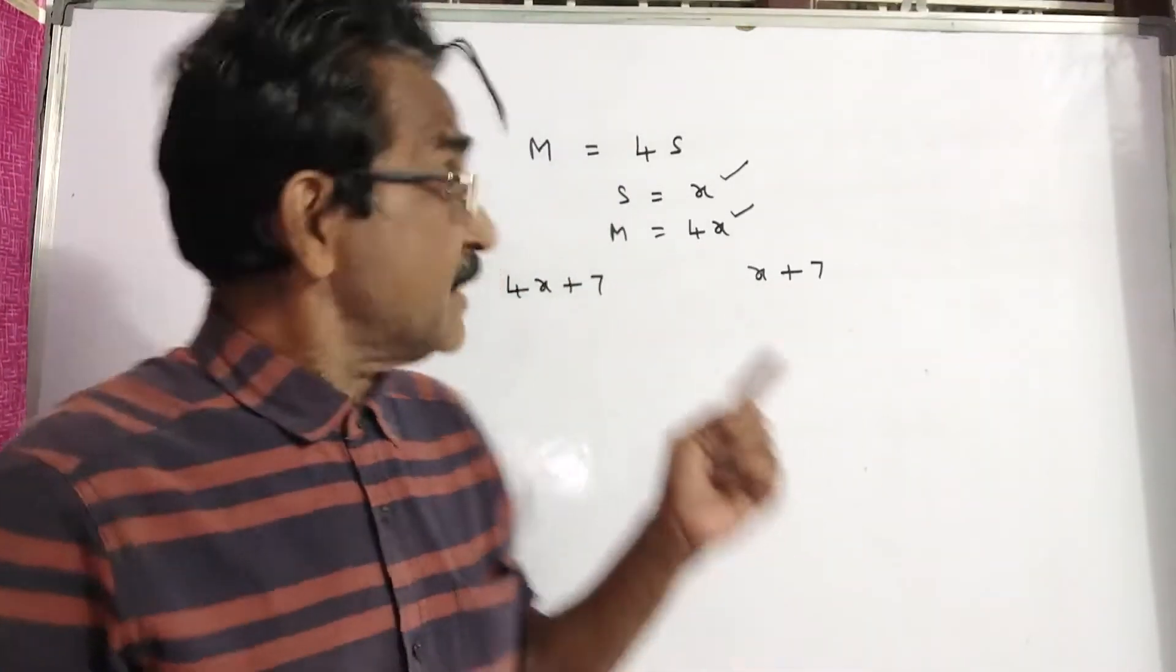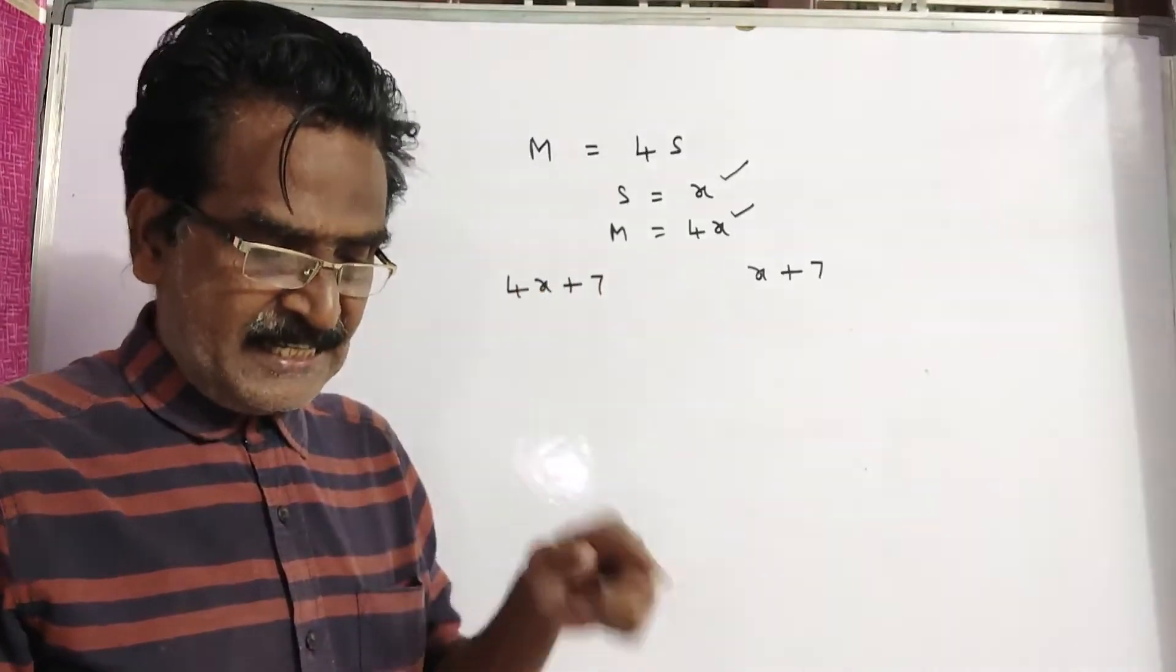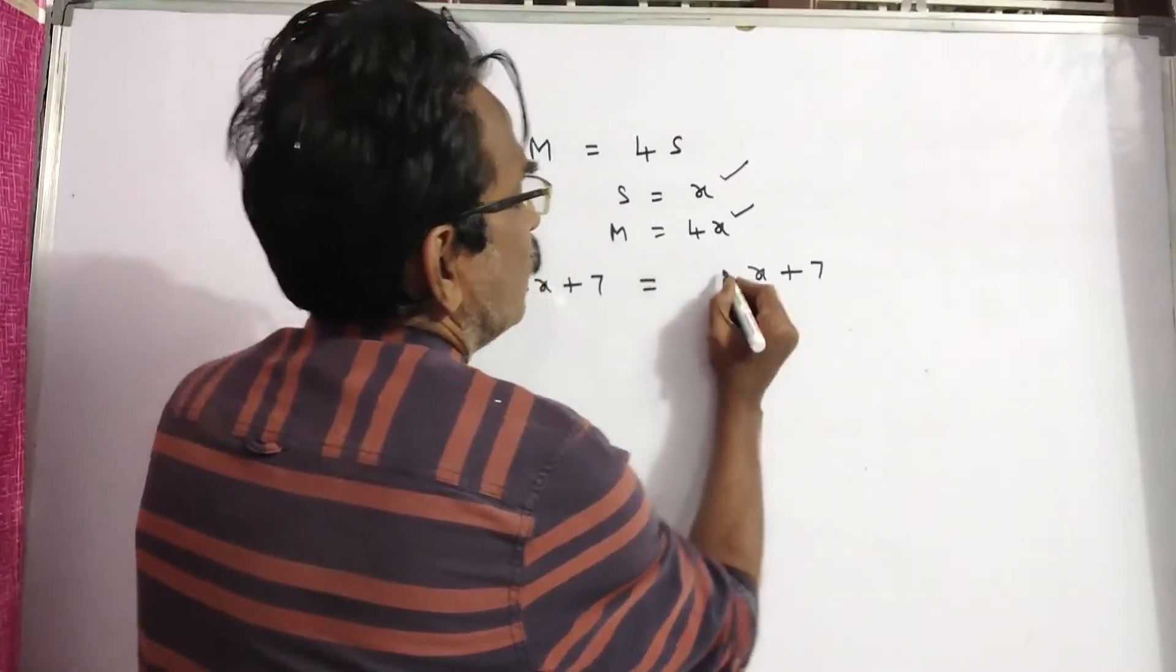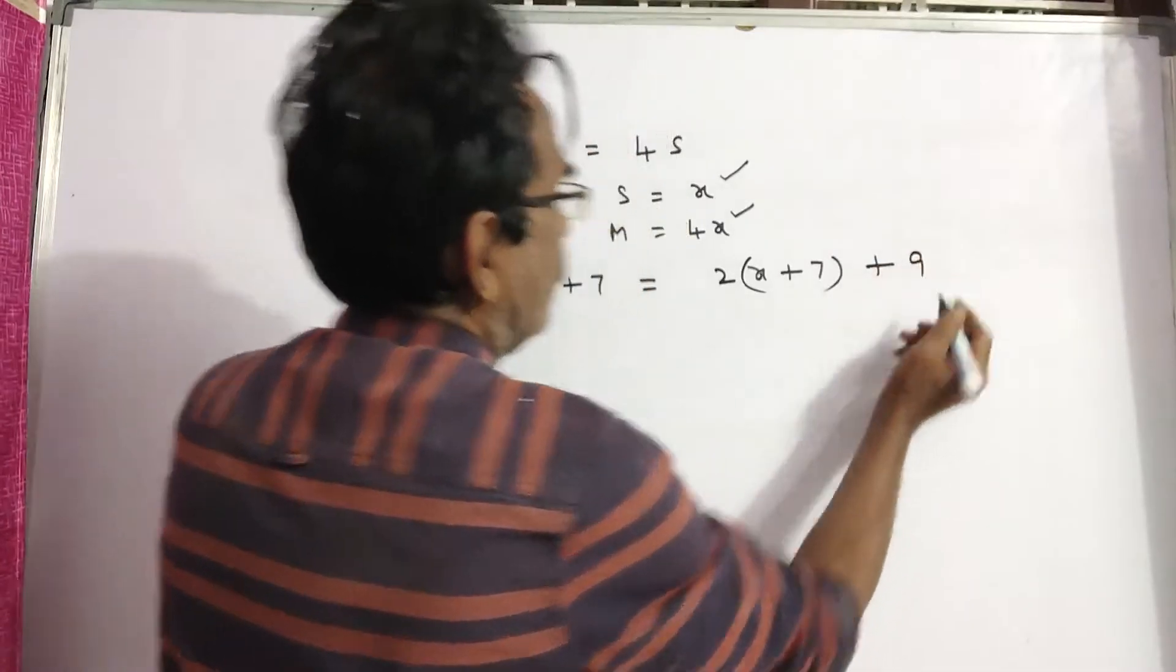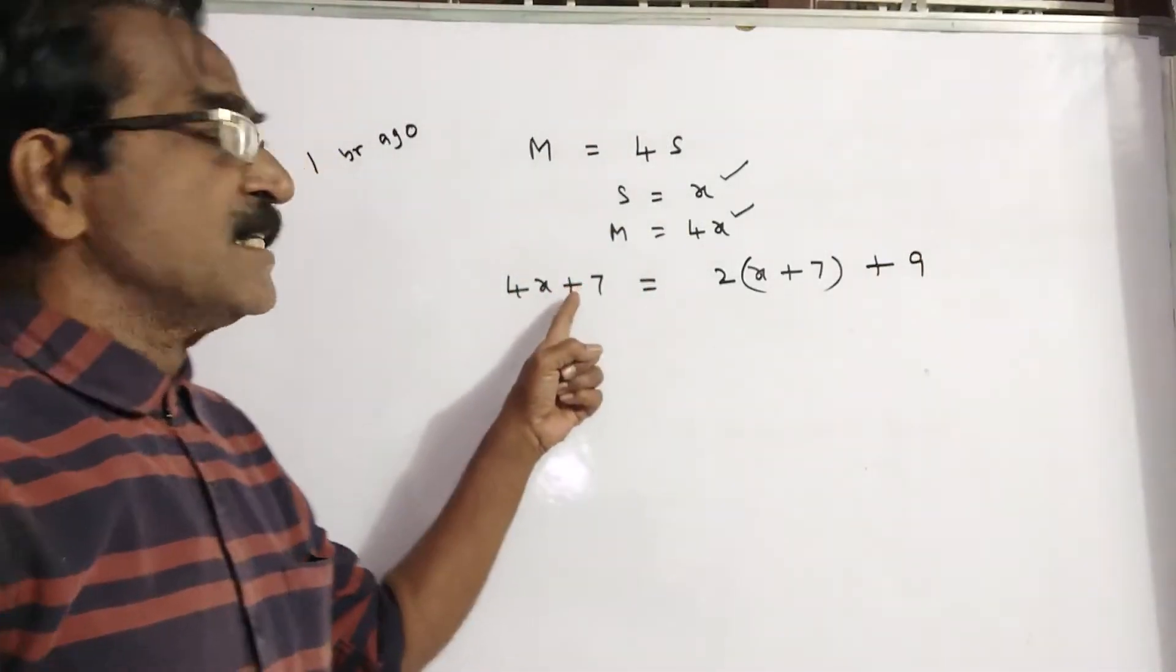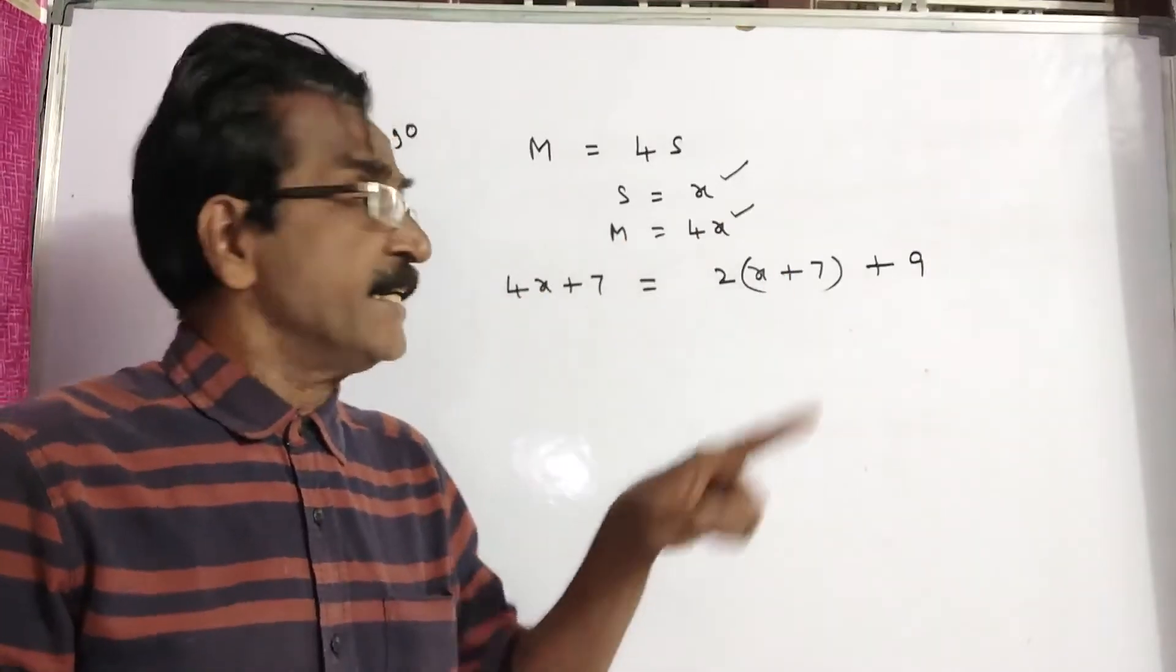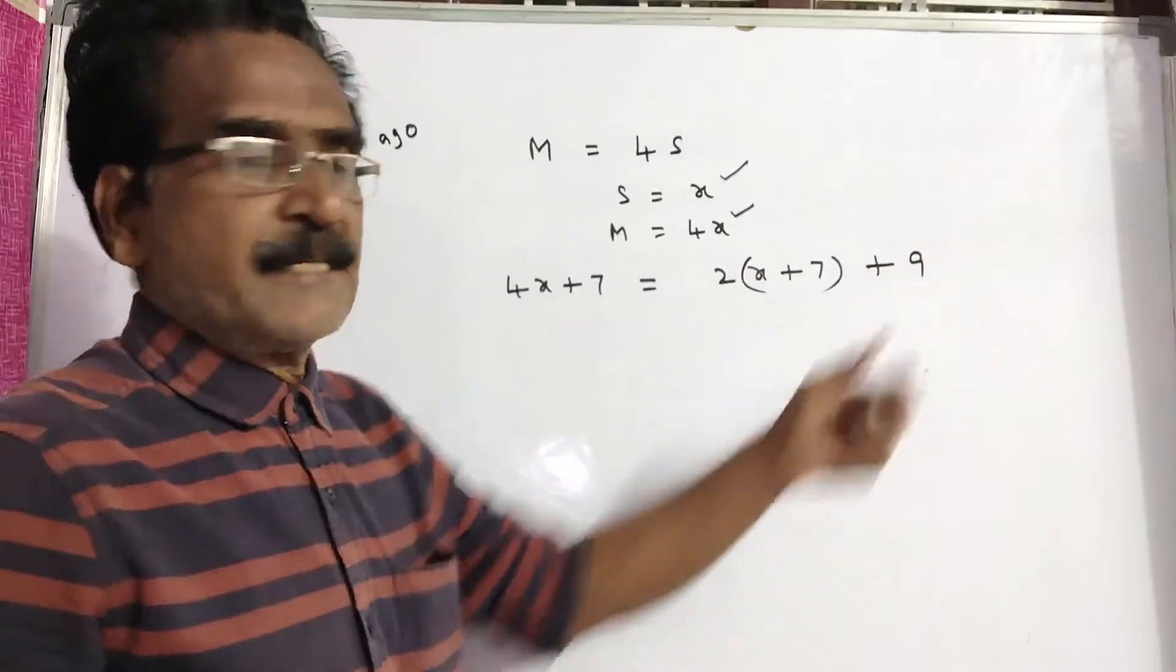After 6 years, his age exceeds twice his son's age by 9 years. So twice his age by 9 years.